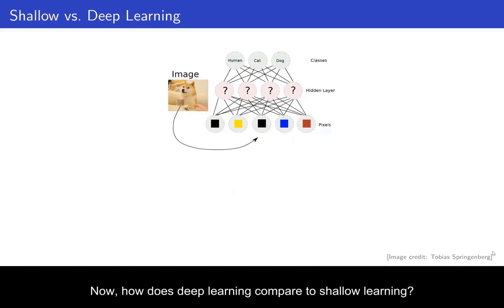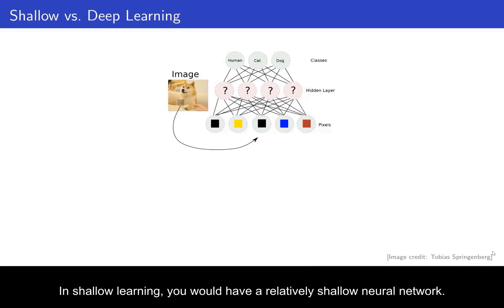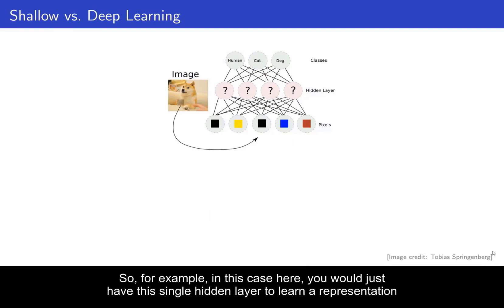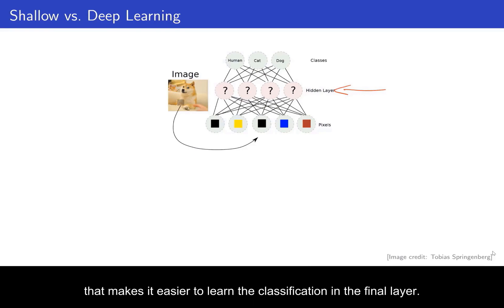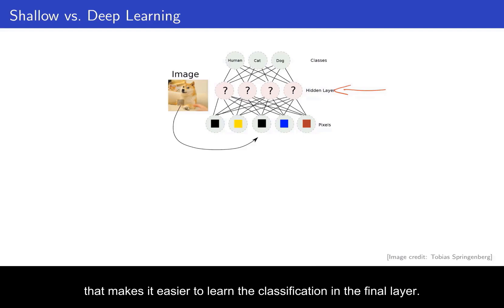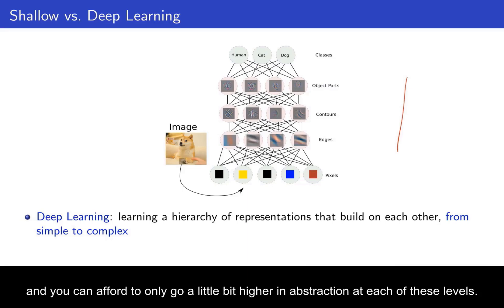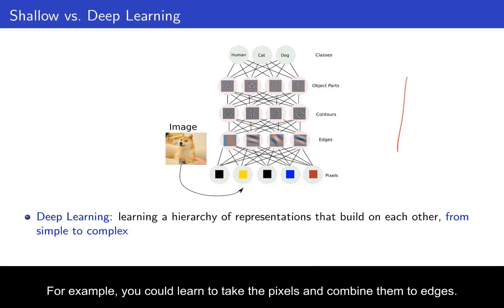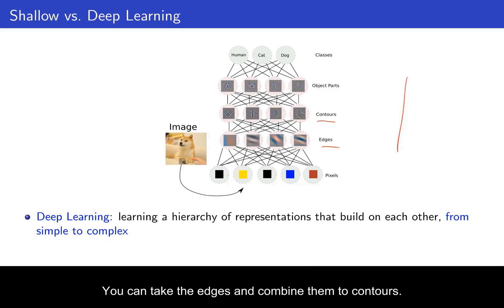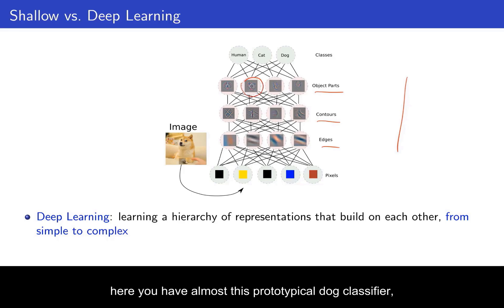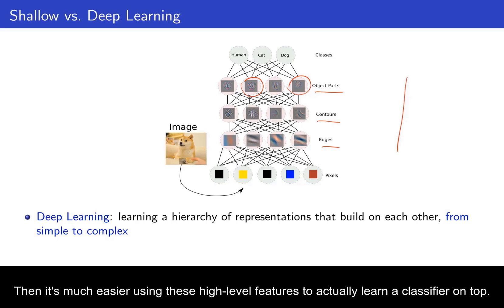How does deep learning compare to shallow learning? In shallow learning, you have a relatively shallow neural network with just a single hidden layer to learn a representation that makes classification easier in the final layer. In contrast, deep learning learns on multiple levels of representation, going only a little bit higher in abstraction at each level. For example, you could learn to combine pixels into edges, edges into contours, contours into object parts, and then use those object parts — like a prototypical dog or a caricature of a human — to easily learn a classifier on top.